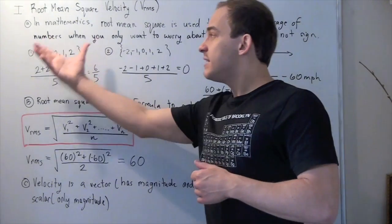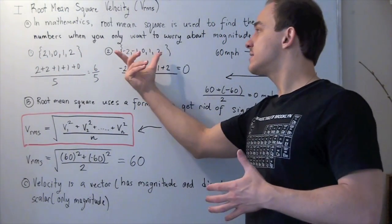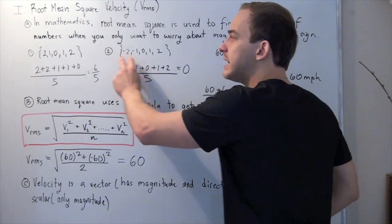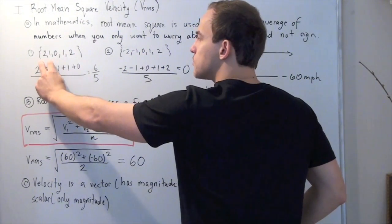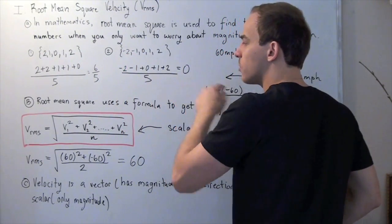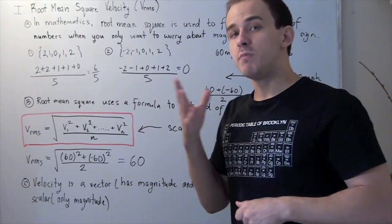Now look, in this set, all my numbers have the same magnitude as these guys. But in this set, these first two numbers have the same magnitude as these first two numbers, but different signs. And that's why my average is 0. So in some cases, this type of average won't make sense.